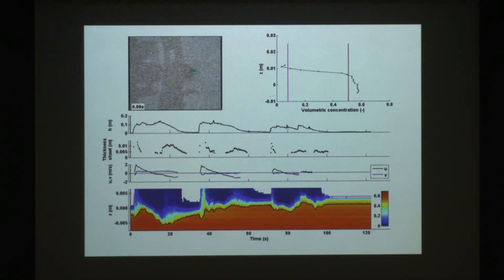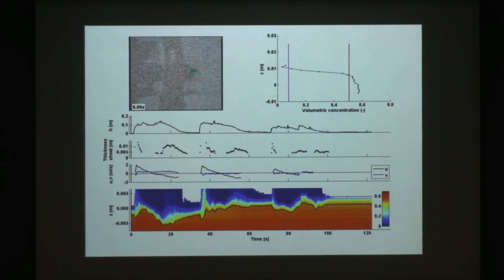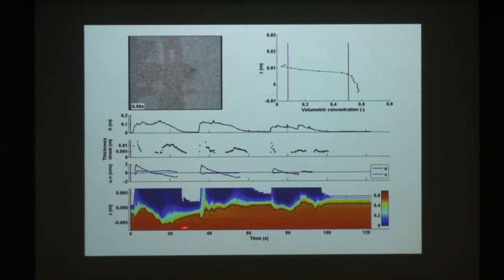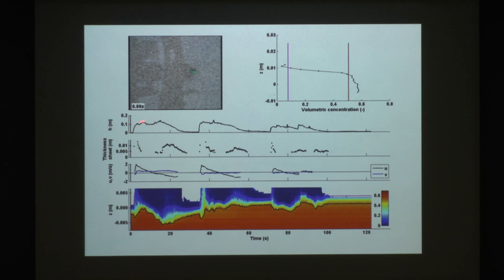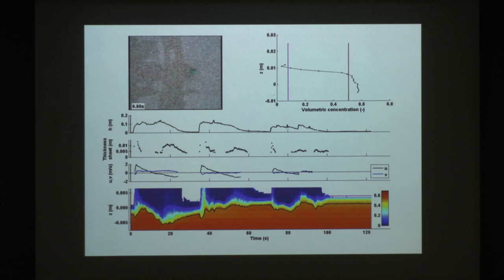Now I'm going to show you a movie - this is my favorite slide. It's a lot to take in so I usually watch it several times. Let me tell you what all the parts are before I hit play. We have 120 seconds in time. This is the p-color of concentration: black is the bottom of the sheet layer, pink is the top, normalized to the initial bed level where z equals zero. The next panel shows cross-shore velocity in black, longshore in blue. Then sheet thickness, then water depth, and then the instantaneous sediment concentration profile - volumetric concentration on the x-axis, elevation on the vertical axis.